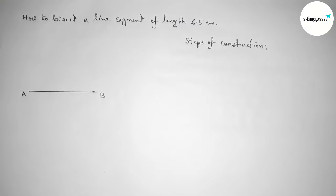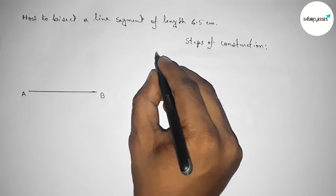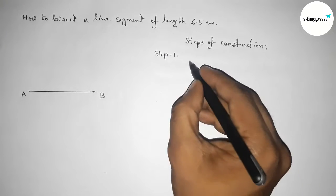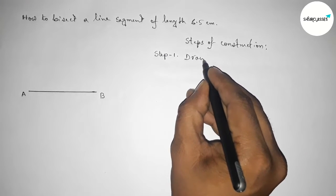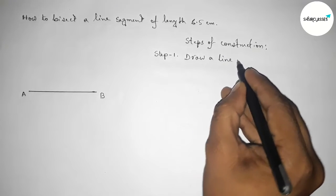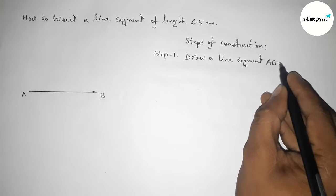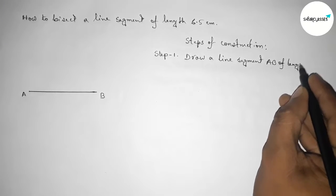So step number one: First draw a line segment AB of length 6.5 centimeters.